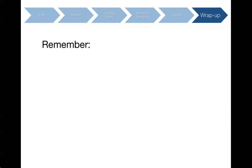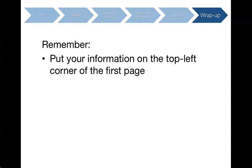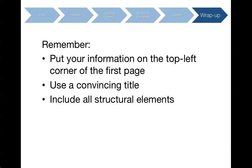So just to wrap up, here's what we've talked about in this webinar. Don't forget to include your information — your GDPPC ID, the country you're addressing, scenario, and so on — on the first page. Be creative and come up with an eye-catching title. Make sure you have all structural elements: introduction, body, and conclusion, and that your arguments have a logical flow. Use a clear layout to visually organize your paper. Structure makes up 20 points of your total score, and this is an easy 20 points if you do it right. There's more information in the writing guidelines, which you can download from the GDPPC website. Thanks for watching and good luck!